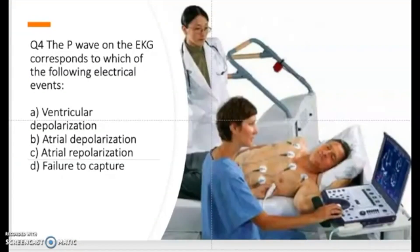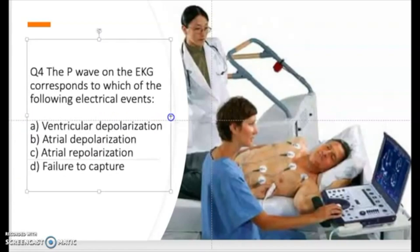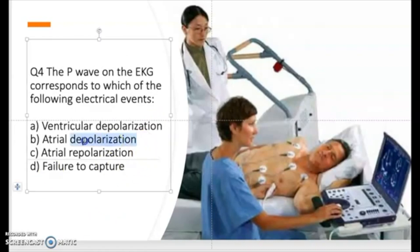Question four: the P wave on the EKG corresponds to which of the following electrical events? Is it A) ventricular depolarization, B) atrial depolarization, C) atrial repolarization, or D) failure to capture? Take a moment and think about it. The correct answer for question four is atrial depolarization.